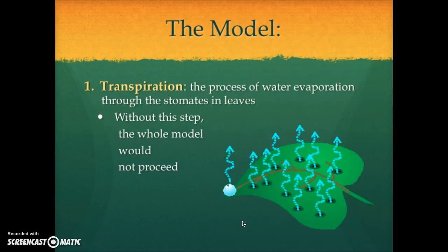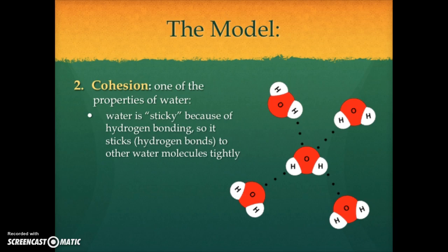The first step is transpiration. Transpiration is the evaporation of water through the stomata, which are located on the underside of each leaf. This step is crucial. Without it, this whole process wouldn't happen. This step is actually a property of water that is essential as well.